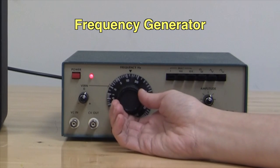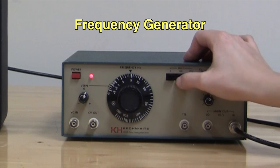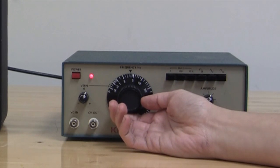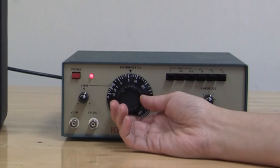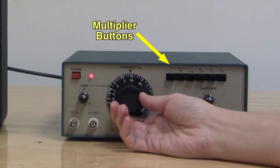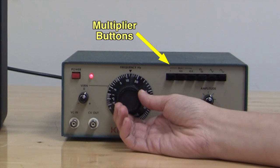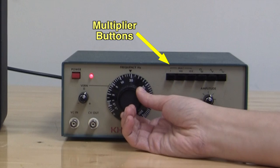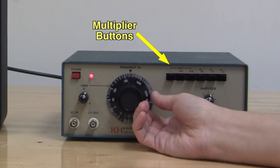The frequency generator sends signals to the loudspeaker causing the loudspeaker to vibrate and create sound. By turning the dial, you can adjust the frequency. The multiplier buttons allow you to change the frequency by a multiple of 1, 100, or 10,000.